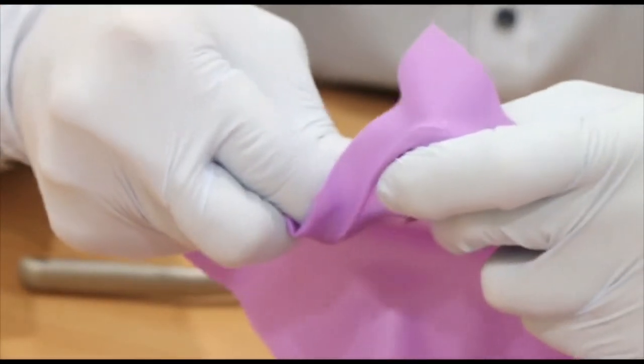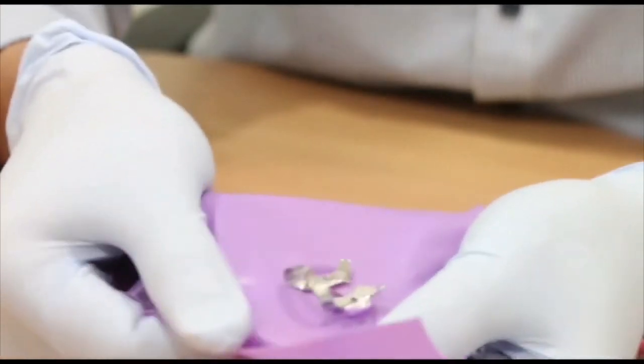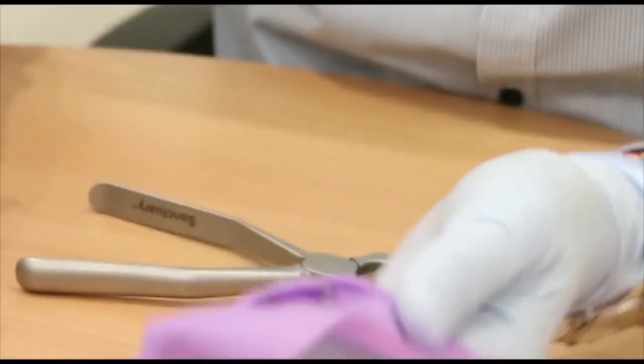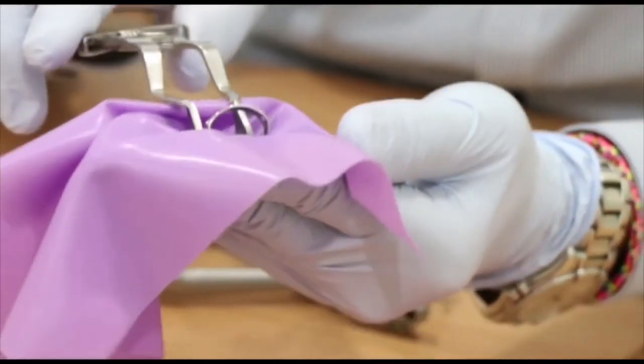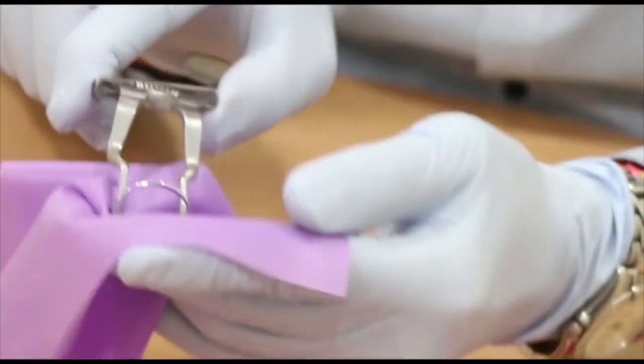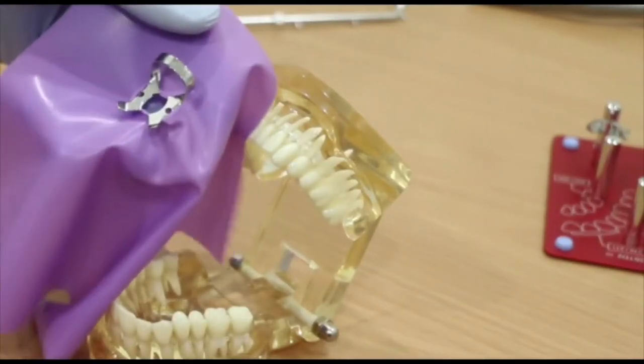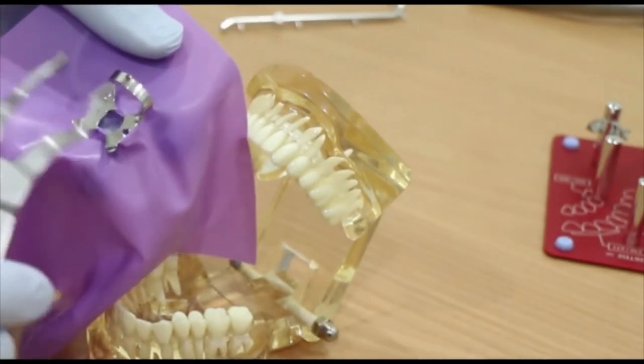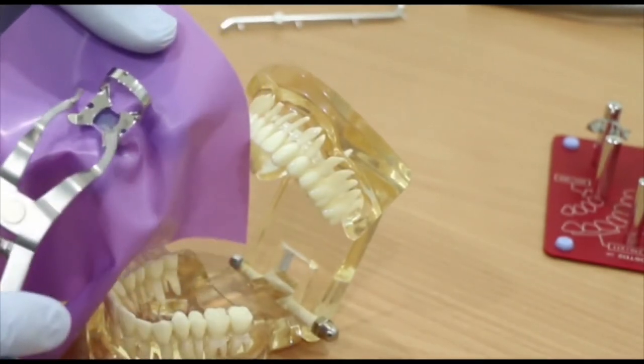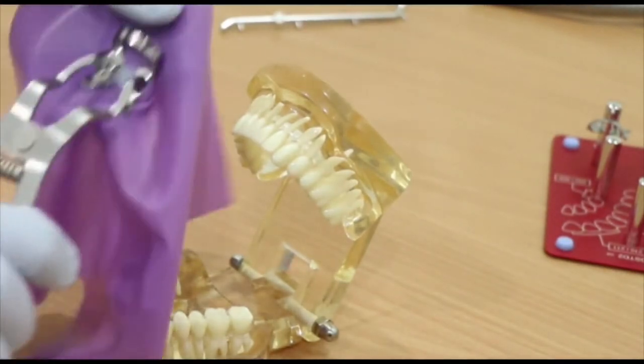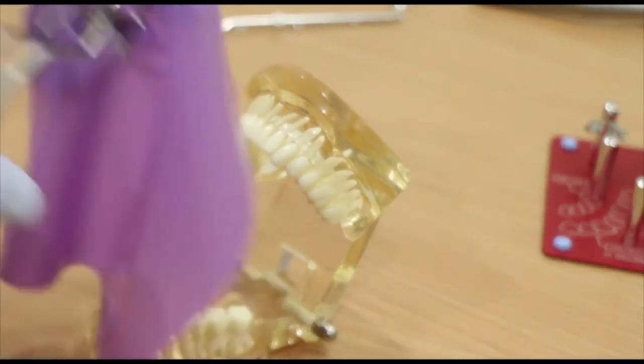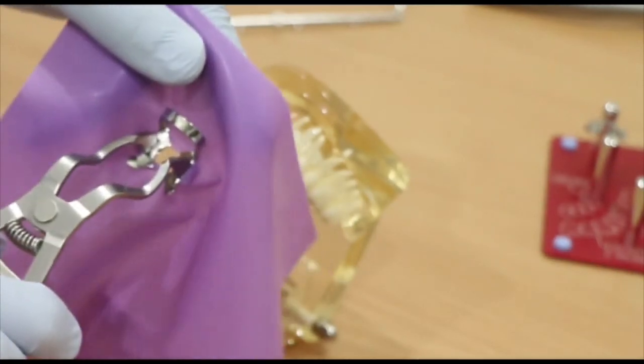So it's very good for easy placement of the rubber dam, and therefore we are going to put this onto the model. As you can see, we have one piece of pre-fixed rubber dam with the clamps, and why is the anti-ripping feature very important?